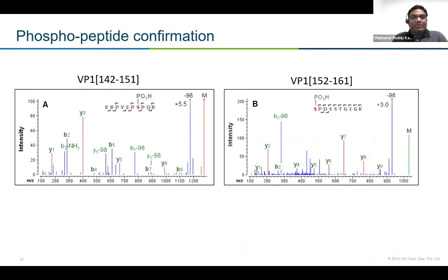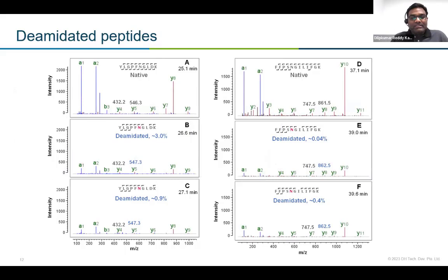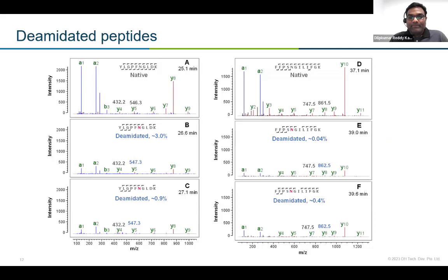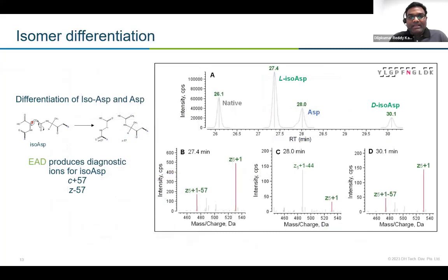Similarly, we could get very good MS/MS confirmation for both serine phosphorylation sites in the AAV8 serine peptides. In this protein digest, we observed multiple deamidated peptides — for example, one representative peptide shows 0.9% deamidation and another shows 0.04% deamidation, with MS/MS confirmation for the exact site of modification.